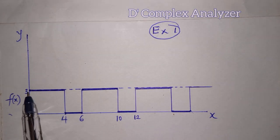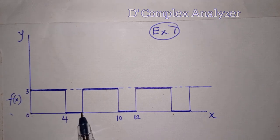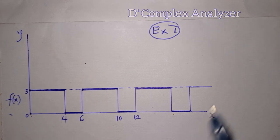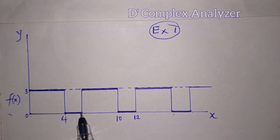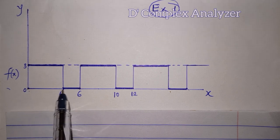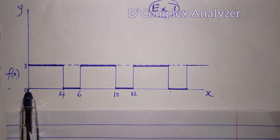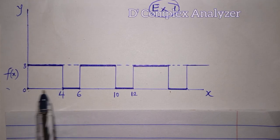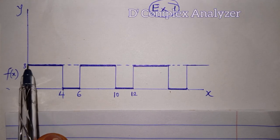If we can describe from here to here we have gotten the description of the function, because from here again the function will start repeating itself — that is, the function values will start repeating. Remember what we said in the previous video about period of a function. So let's describe from here to here. This is x equal to 0, x equal to 4. So between x equal to 0 and x equal to 4, I want to describe this line. Between x equal to 0 and x equal to 4, y is equal to what?